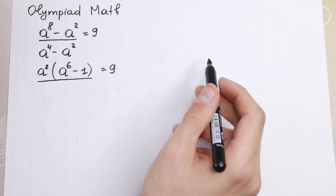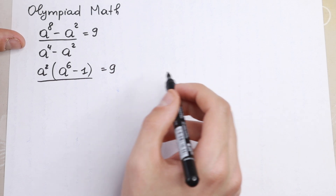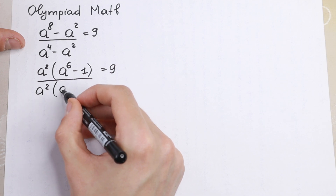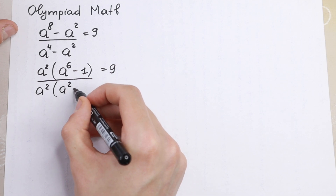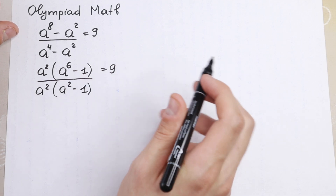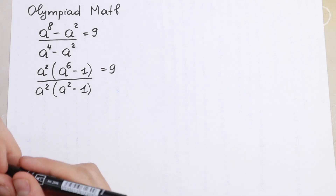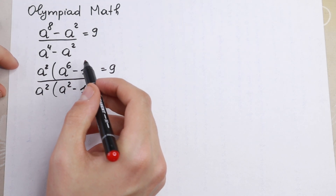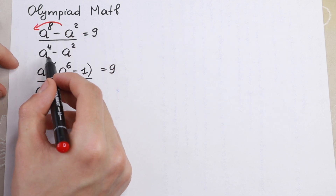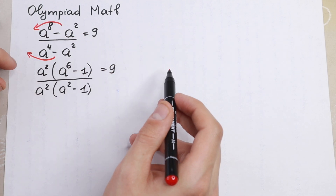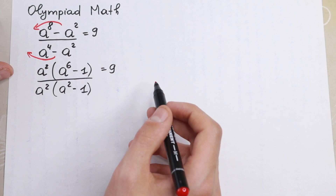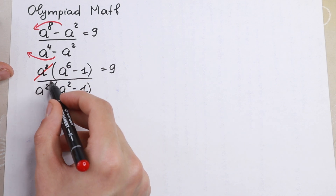Because right here we have a fourth power and a second power, we can factor out the second power. So we get a squared times (a squared minus one) in the denominator. It's not hard to see that we factor out a squared from the numerator and factor out a squared from our denominator. Moreover, this a squared is the same in numerator and denominator, so we can easily cancel it.